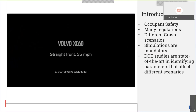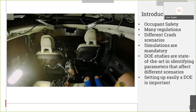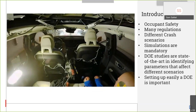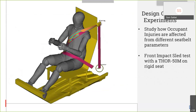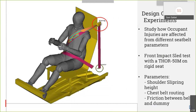Since DOE studies are used more and more, setting up a DOE easily is very important. In this presentation, we will see a setup of a DOE study, and this DOE will study how occupant injuries are affected by different seatbelt parameters. We will use a front impact sled test with a THOR 50M dummy on a rigid seat. The parameters we will check are the shoulder slip ring height, the chest belt routing path, and the friction between the belt and the dummy.